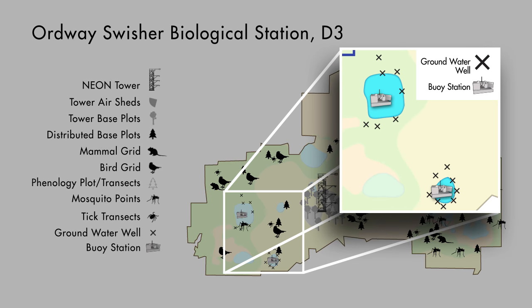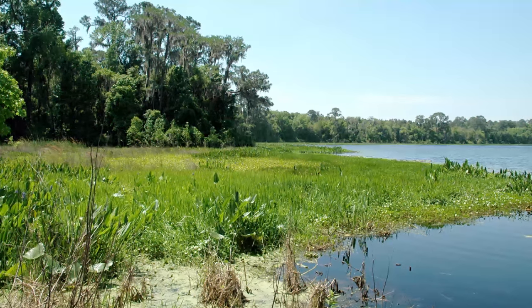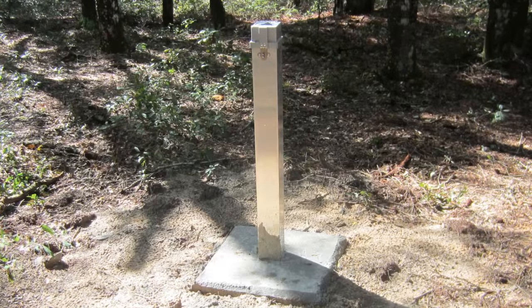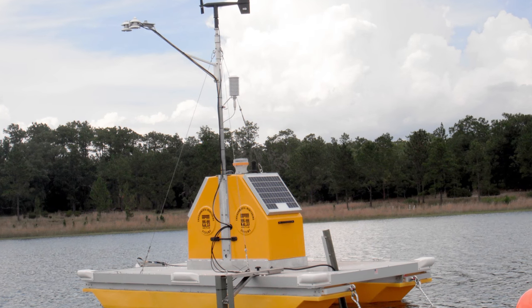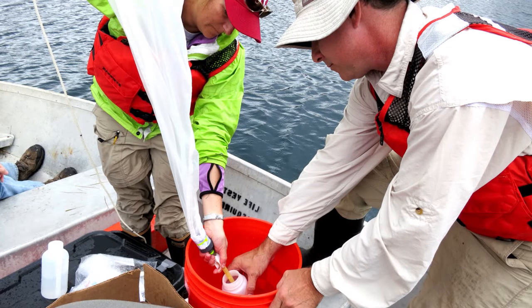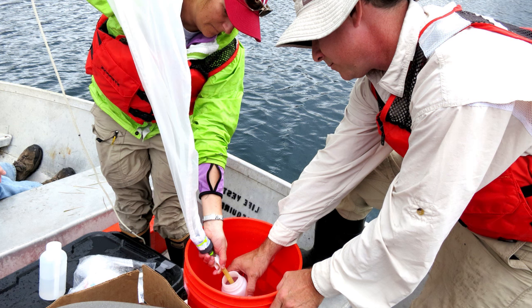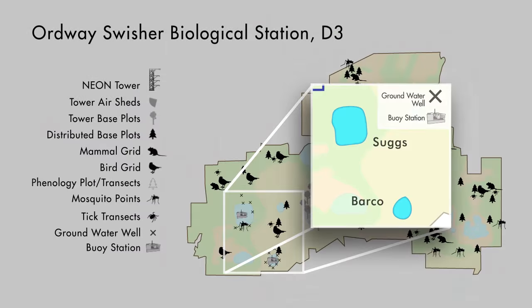At Ordway Swisher we also have two different aquatic sites — two different lakes called Suggs and Barco — and we have worked to ensure linkages between the data taken in these aquatic systems and the data taken on the terrestrial system. Surrounding the lakes we have different measurements of riparian habitat, groundwater wells, and different kinds of sensors located within the aquatic system itself, as well as observations made by field crews within that aquatic system.